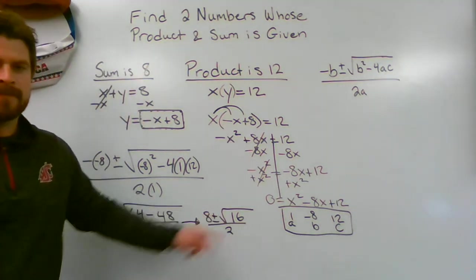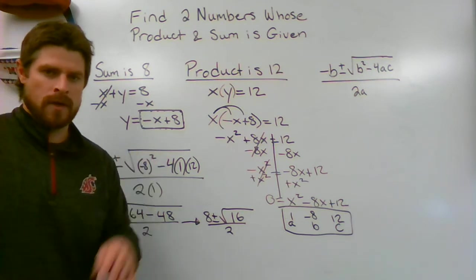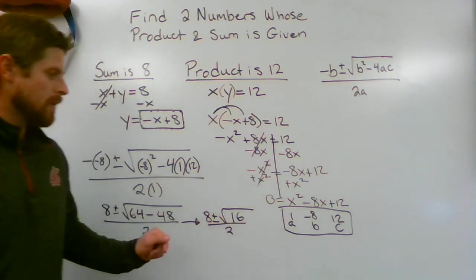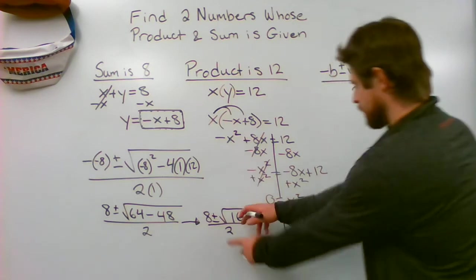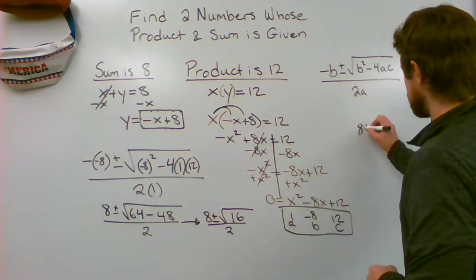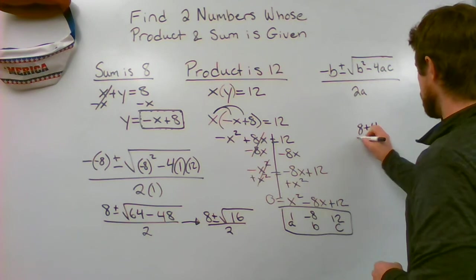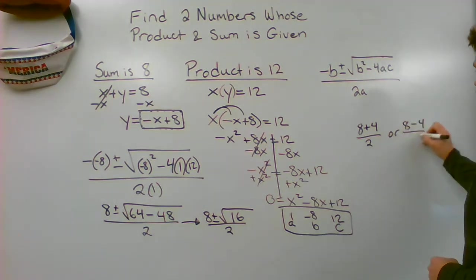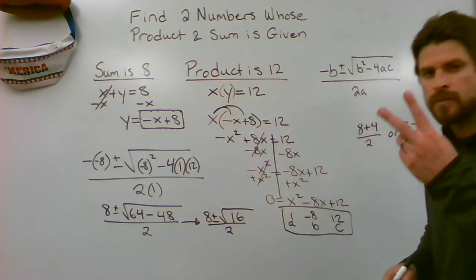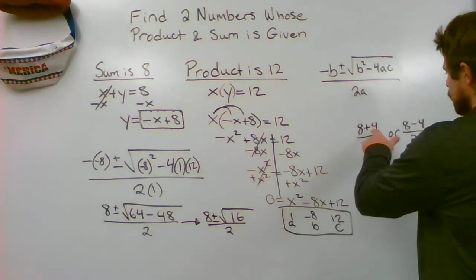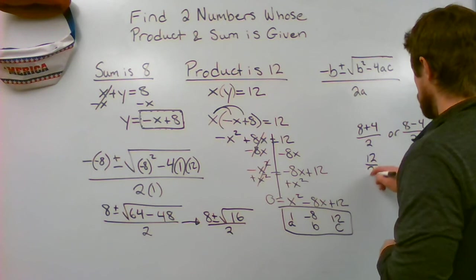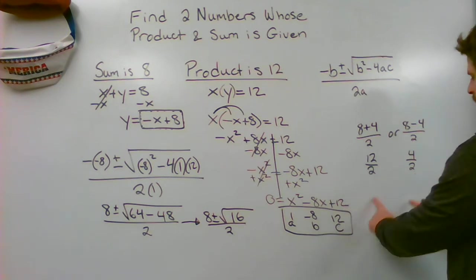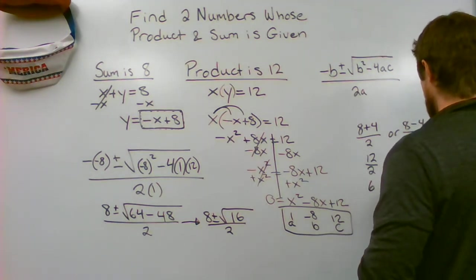So what I'm doing is I'm either going to add 8 plus 4 or 8 minus 4 on top. Hopefully you're okay with moving this information over here with me. 8 plus 4 divided by 2, or 8 minus 4 divided by 2. Those are our two possible solutions. Let's work them both out. 8 plus 4 is going to give me a 12 divided by 2. 8 minus 4 is going to give me a 4 divided by 2. Simplify these down, 6 or 2.